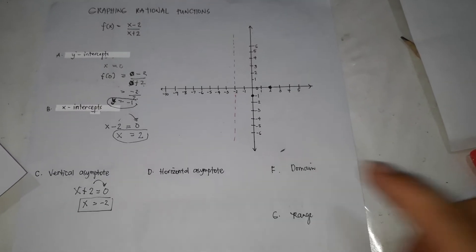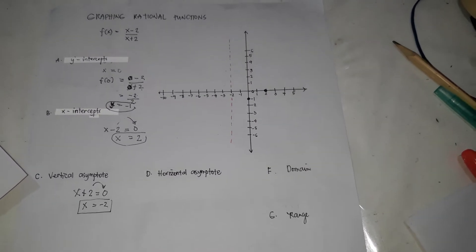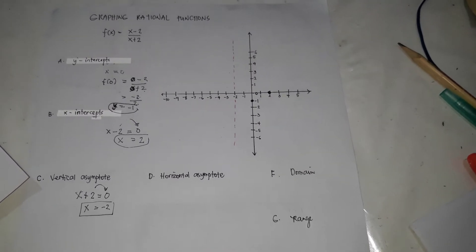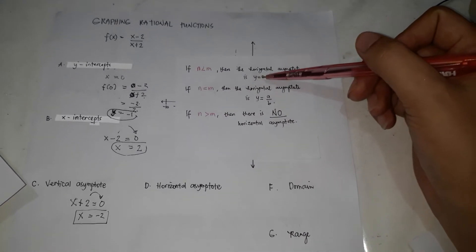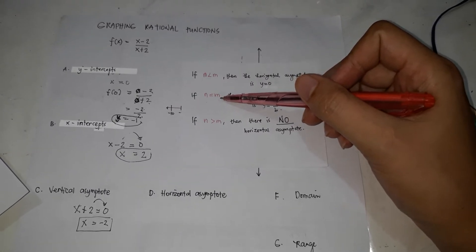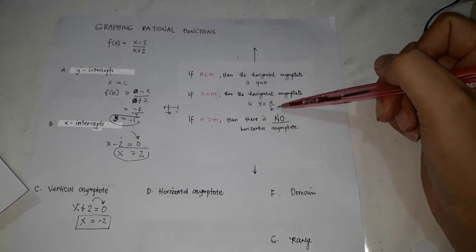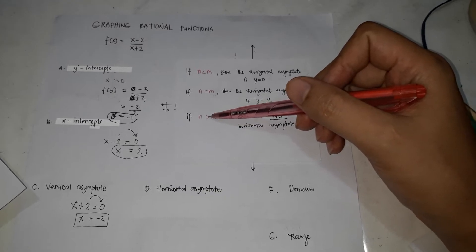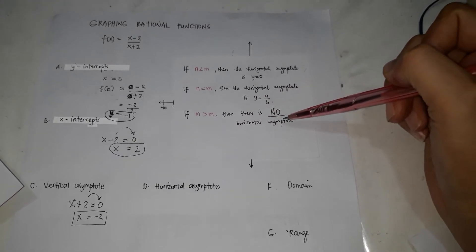The horizontal asymptote requires a rule. If n is less than m, then the horizontal asymptote is y equals 0. If n is equal to m, then the horizontal asymptote is y equals a over b. If n is greater than m, then there is no horizontal asymptote.